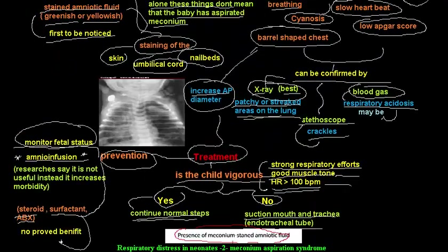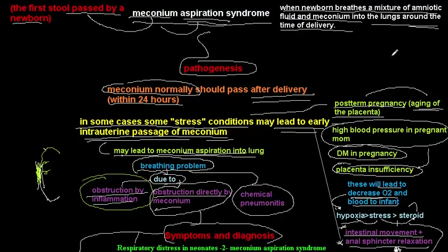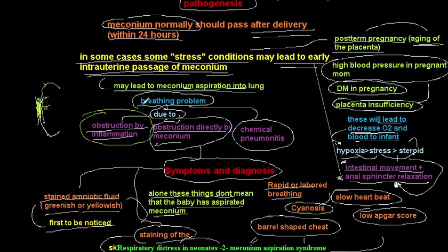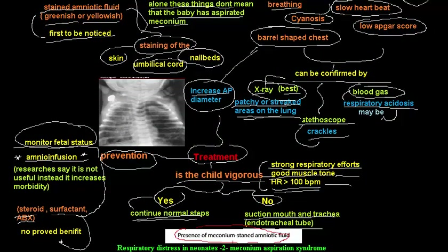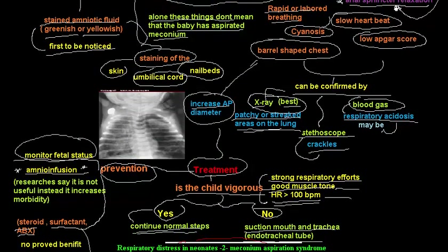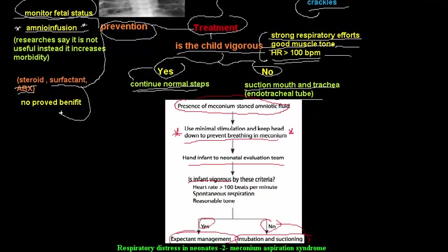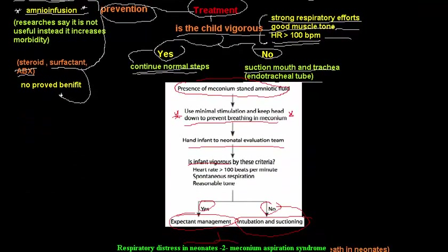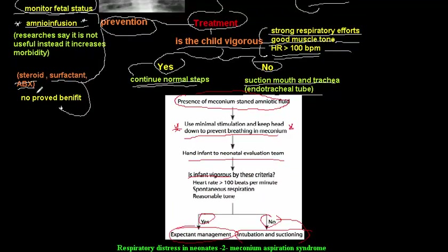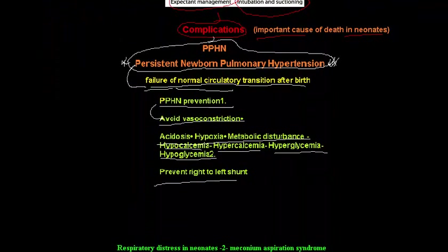In summary, this video covered the definition of meconium aspiration syndrome, its pathogenesis, symptoms and diagnosis including chest X-ray, blood gas analysis, and stethoscope crackles, and treatment including prevention. Steroids, surfactant, antibiotics, and amnioinfusion have no proven benefit. The main complication is persistent newborn pulmonary hypertension.